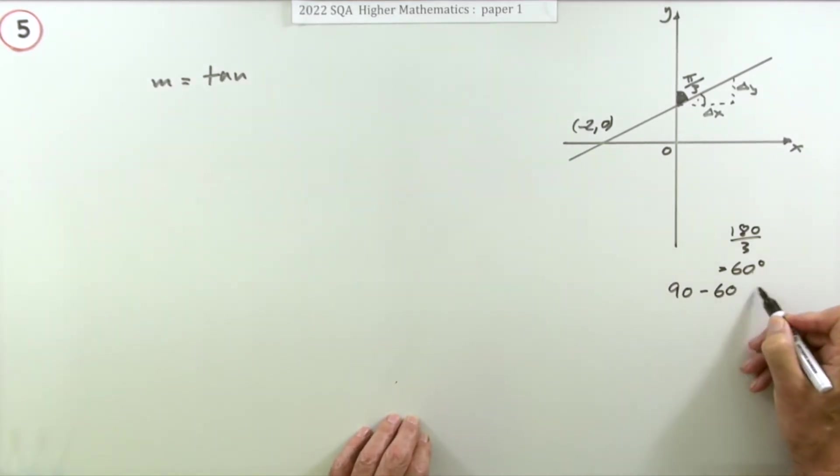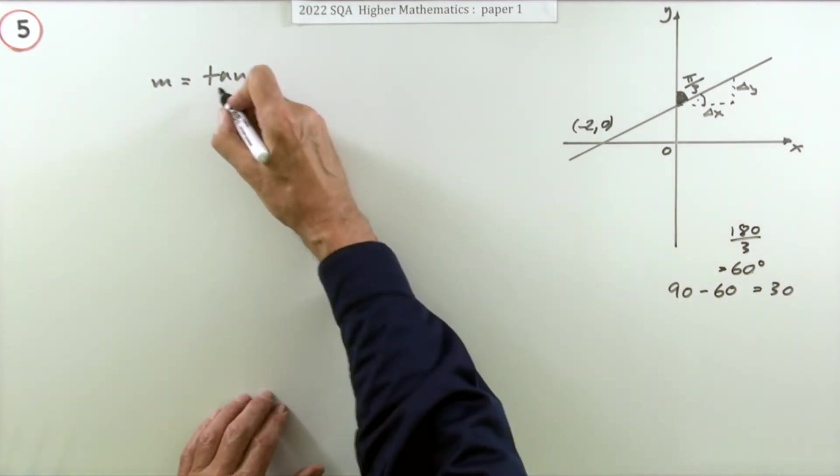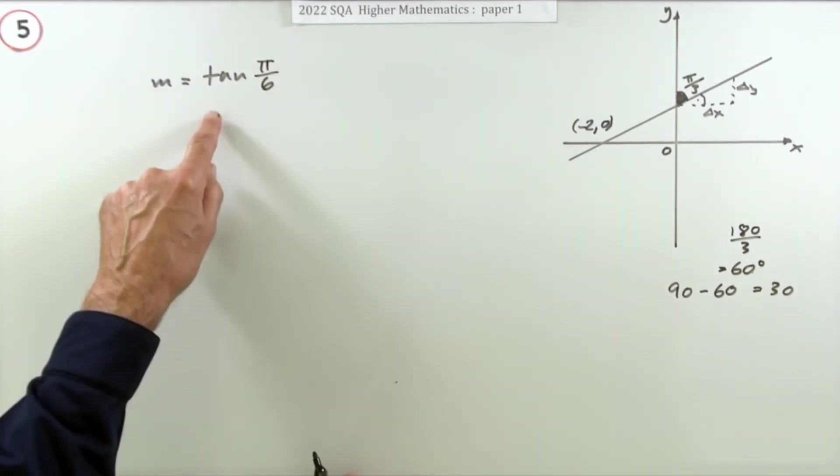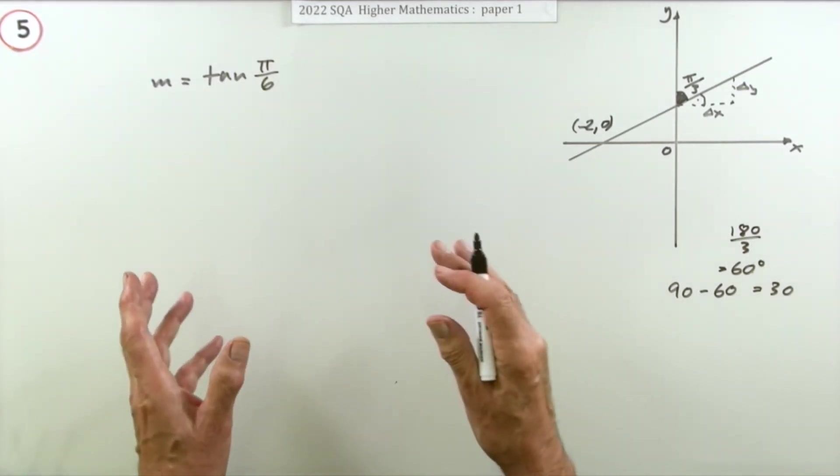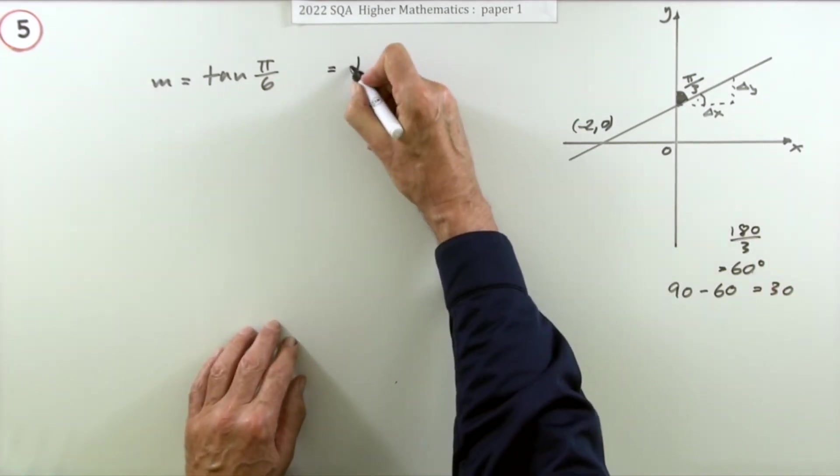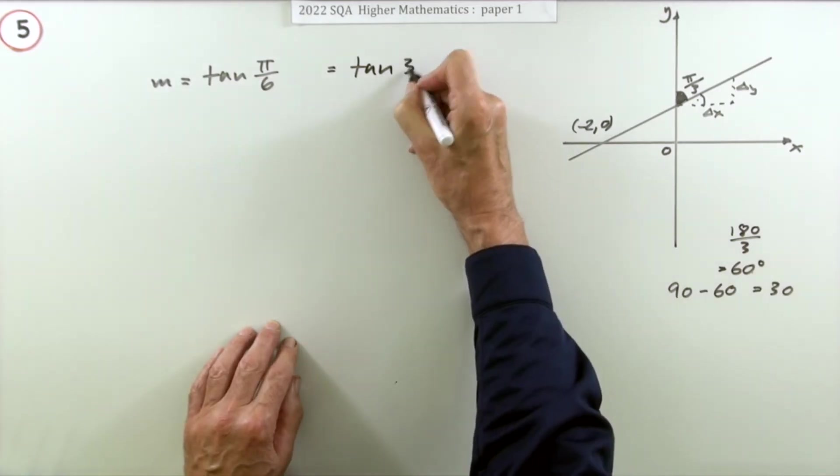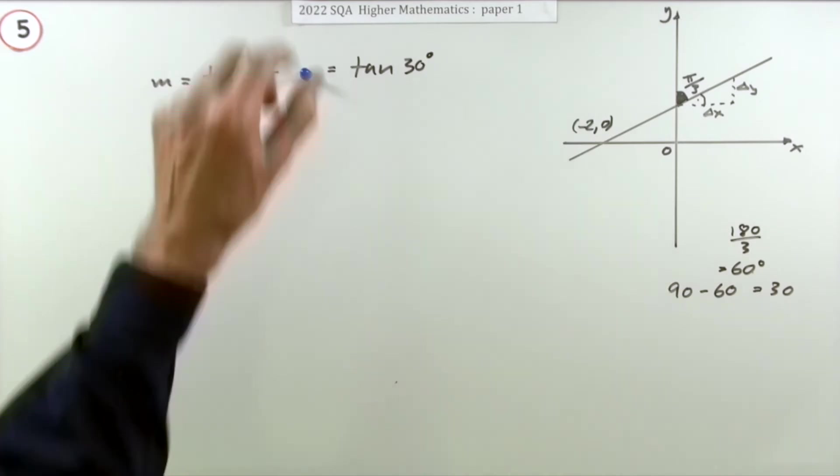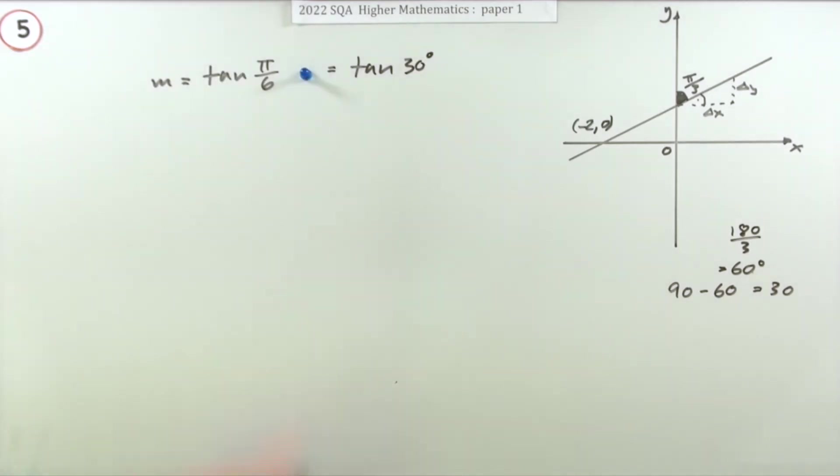It's 90 minus 60 equals 30, and then you could translate it—30 degrees is π/6 because 6 times 30 is 180. But according to the marking scheme you can switch it all into degrees, so you could also just use that 30 straight away. tan 30. Just writing that statement gets a mark.